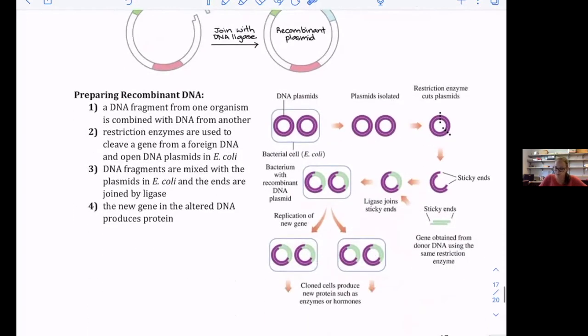So you make this new gene. Let's look at this picture. You have your DNA plasmids. You isolate the specific ones you want, use a restriction enzyme to chop them into pieces, and you have sticky ends.